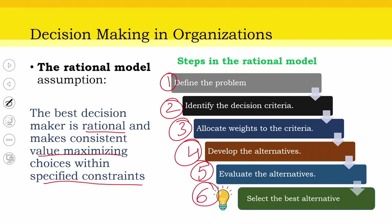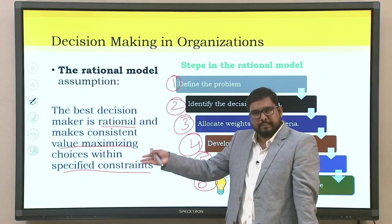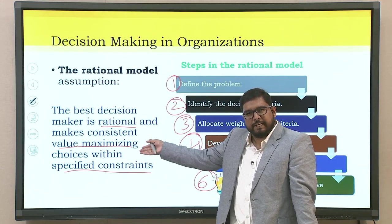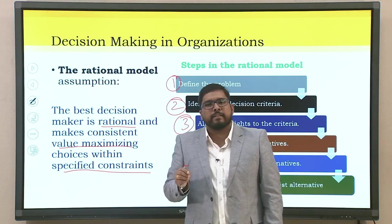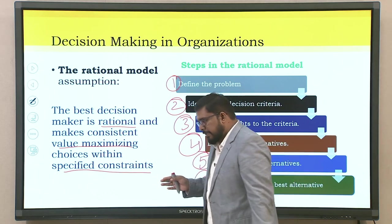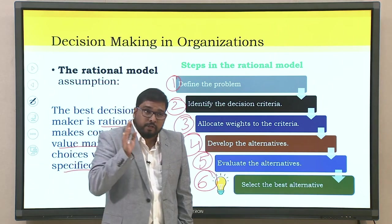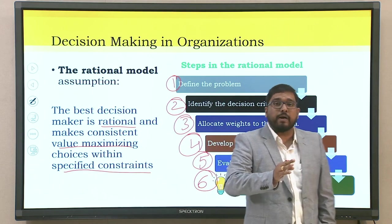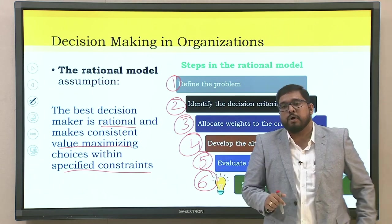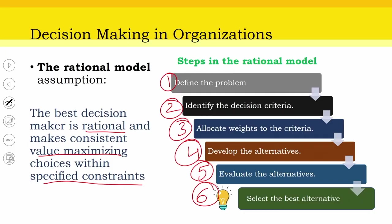The sixth and most important step is to select the best alternative. If you have read literature on negotiation and conflict management, every single negotiation has a BATNA — best alternative to the negotiated agreement. Similarly, every decision making process through the rational model should have different alternatives that are examined critically, weighed, and traded off against one another. From that analysis, select the best alternative suited for the maximum number of people within the organization.